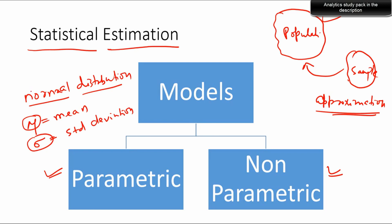If you know the mean and standard deviation, you can always replicate or come up with data for a given normal distribution. You can always find the probability density function given its mu and sigma — mean and standard deviation.